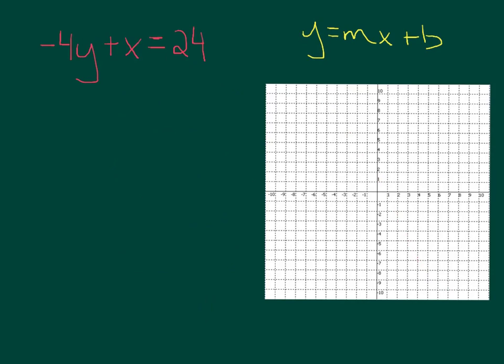Last example. -4y + x = 24. We have to get y by itself. So let's first move this plus x to the other side, which means we have to subtract x on both sides.